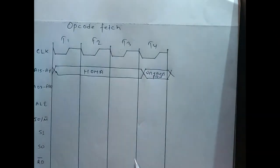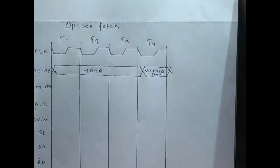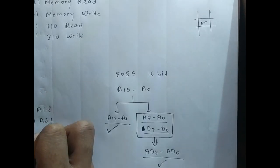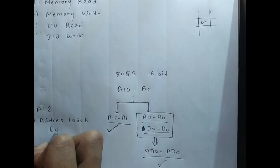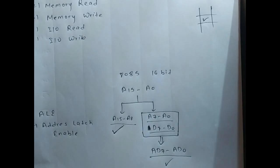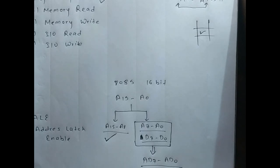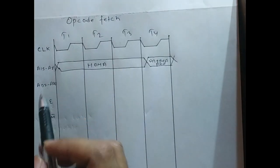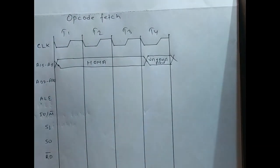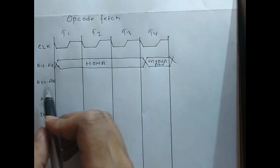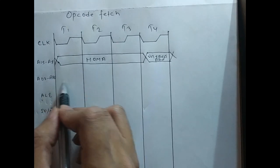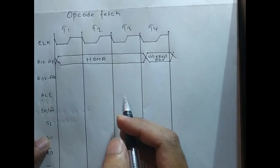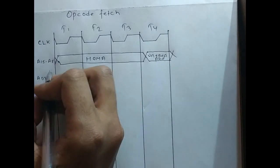Now let's talk about the ALE signal — Address Latch Enable. The work of ALE is to latch, meaning store, the address. Since the AD7 to AD0 bus carries both data and address, first we'll send the lower order memory address on this bus. When the bus is carrying the lower order memory address, we enable the latch so the latch gains and stores that address for future use.